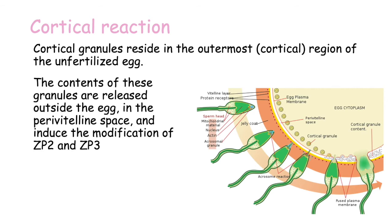If sperm cannot interact with ZP2 and ZP3 — which are needed first to induce the acrosome reaction and second to allow sperm to reach the egg — no more sperm can enter. This is very important because a triploid cell is incompatible with life, so we must prevent polyspermy.